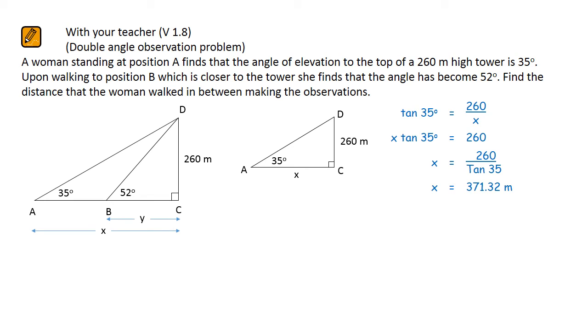Then we look at the small triangle. Once again, it involves opposite and adjacent sides. It's a tan question. The tan of 52 equals 260 over Y. Multiply both sides by Y. Divide both sides by the tan of 52 to find that Y is equal to 203.13 metres.